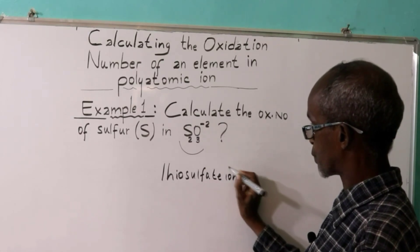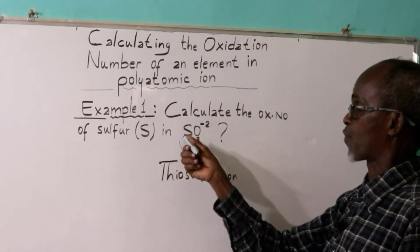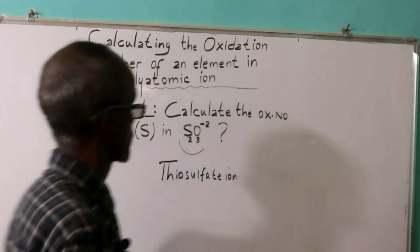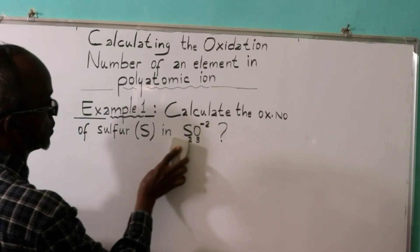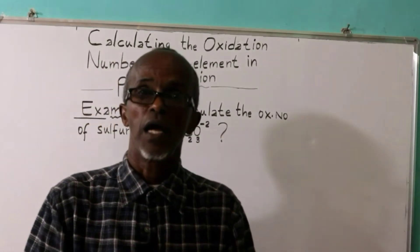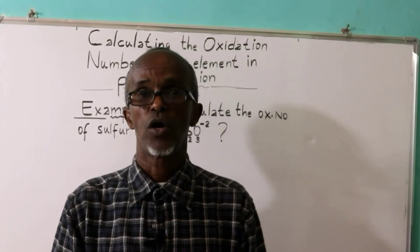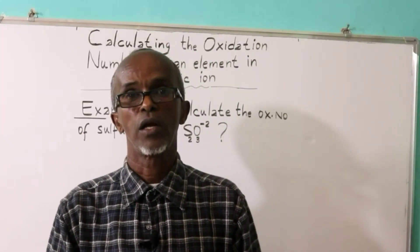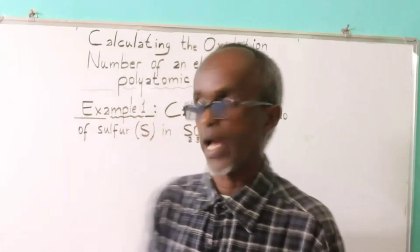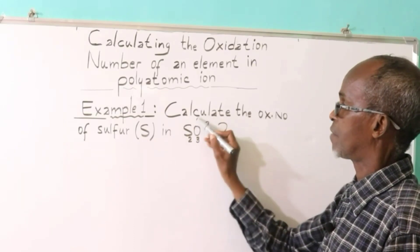The sum of the oxidation number of polyatomic ions is equal to the charge. The sum of the oxidation numbers in polyatomic ions is equal to the charge.